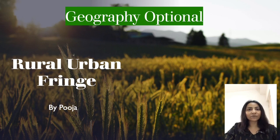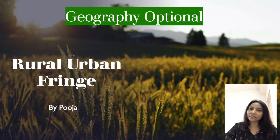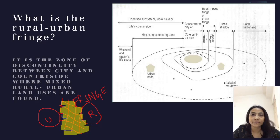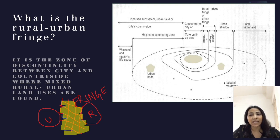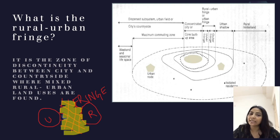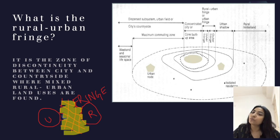Hello everyone, today we are going to discuss a very important topic from settlement geography and that is rural-urban fringe. Rural-urban fringe is actually a zone of discontinuity between the city and the countryside, and in this zone of discontinuity we can find both rural and urban land uses.